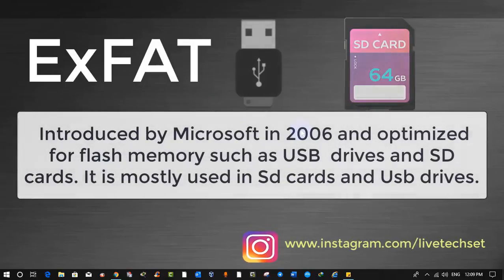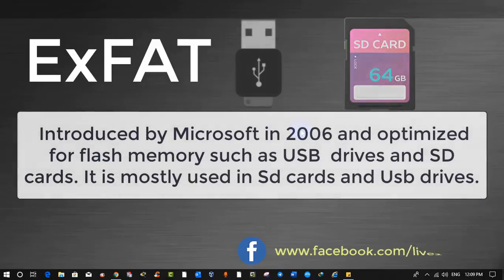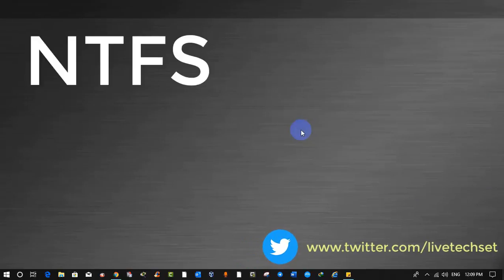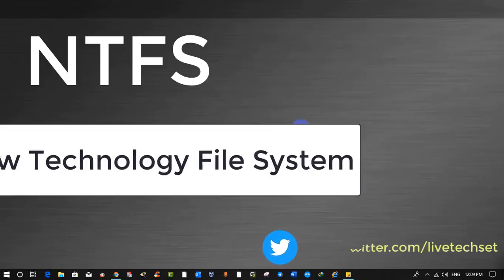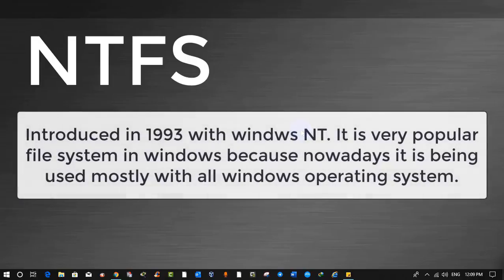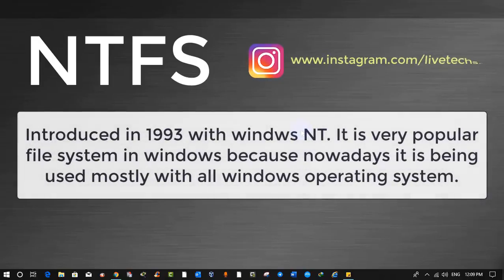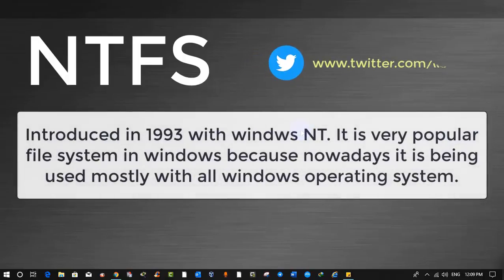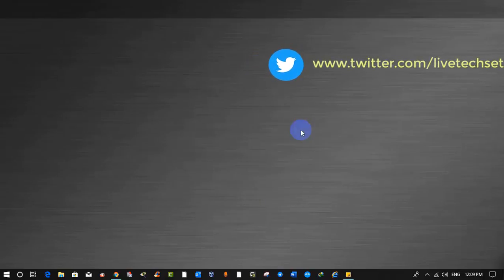It is mostly used in SD cards and USB drives. The third file system is NTFS, which stands for New Technology File System. It was introduced in 1993 with Windows NT. It is a very popular file system in Windows and is nowadays used mostly with all Windows operating systems. This is how we check our file system in Windows.